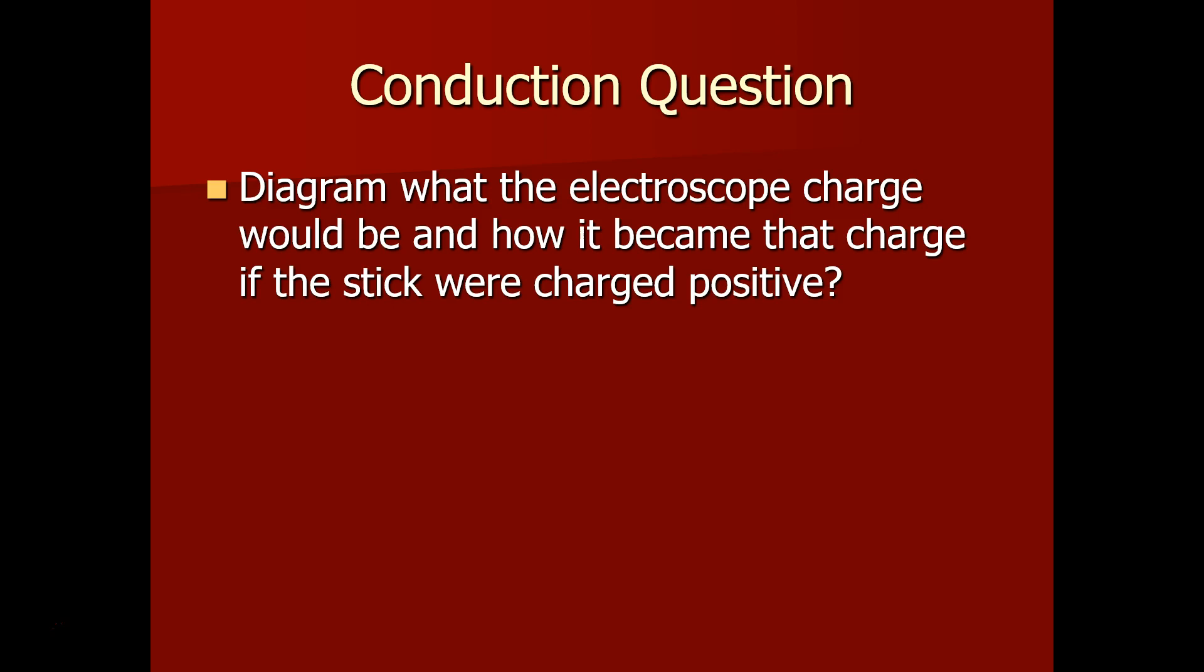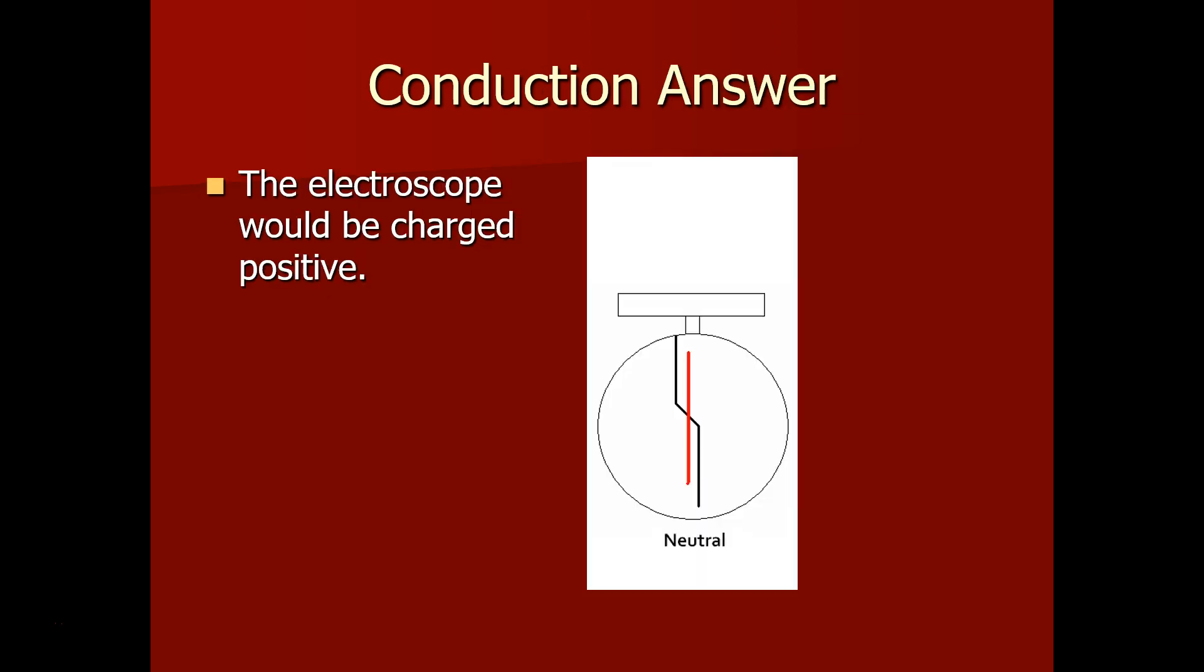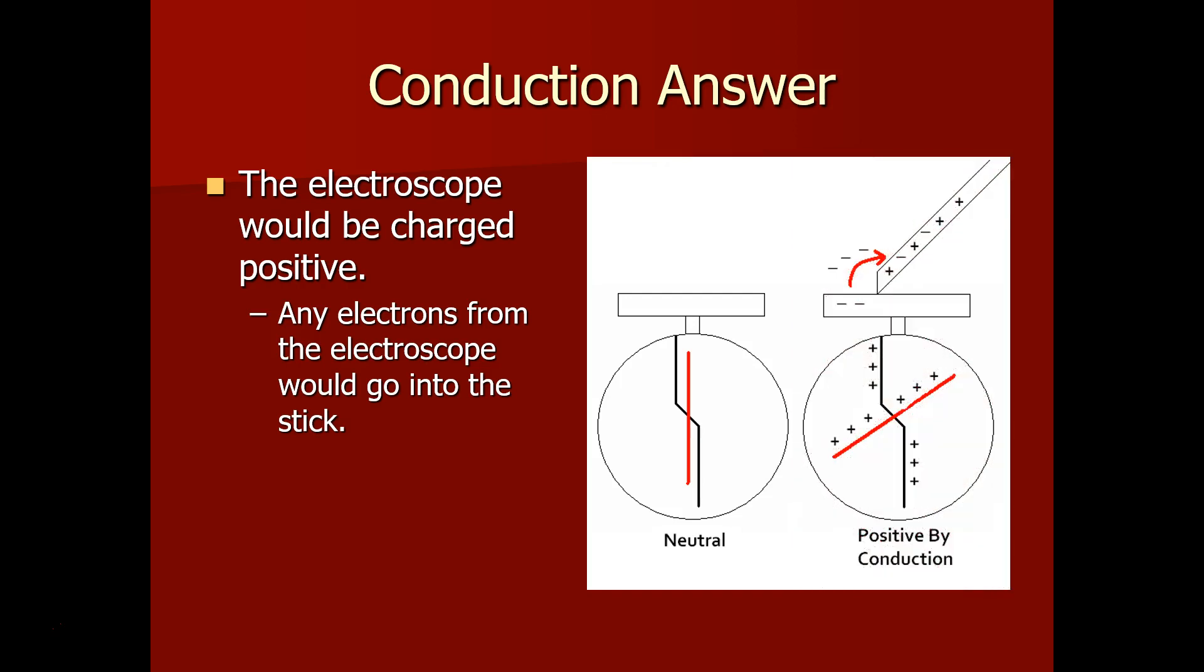Diagram is electroscope if the charges were positive. With conduction, we take the same charge. So the electroscope would be charged positively because the stick would have been positively charged. And the electrons from the electroscope would go into the stick. The only charge that moves is the electron, the negatively charged particle. The electroscope would lose electrons, making it positive. So this is why the electroscope moves again because both parts inside are the same charge.